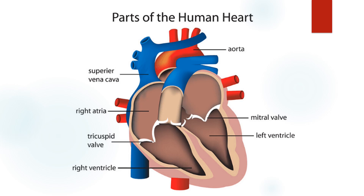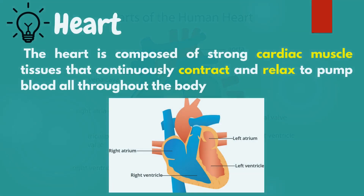The oxygenated blood will then return to the heart using the pulmonary veins, received by the left atrium, passing through the mitral valve, then to the left ventricle. The oxygenated blood will now be delivered to the rest of the body through the aorta. The heart is composed of strong cardiac muscle tissues that continuously contract and relax to pump blood throughout the body — cardiac muscle is only found in the heart and makes up the bulk of the heart's mass.